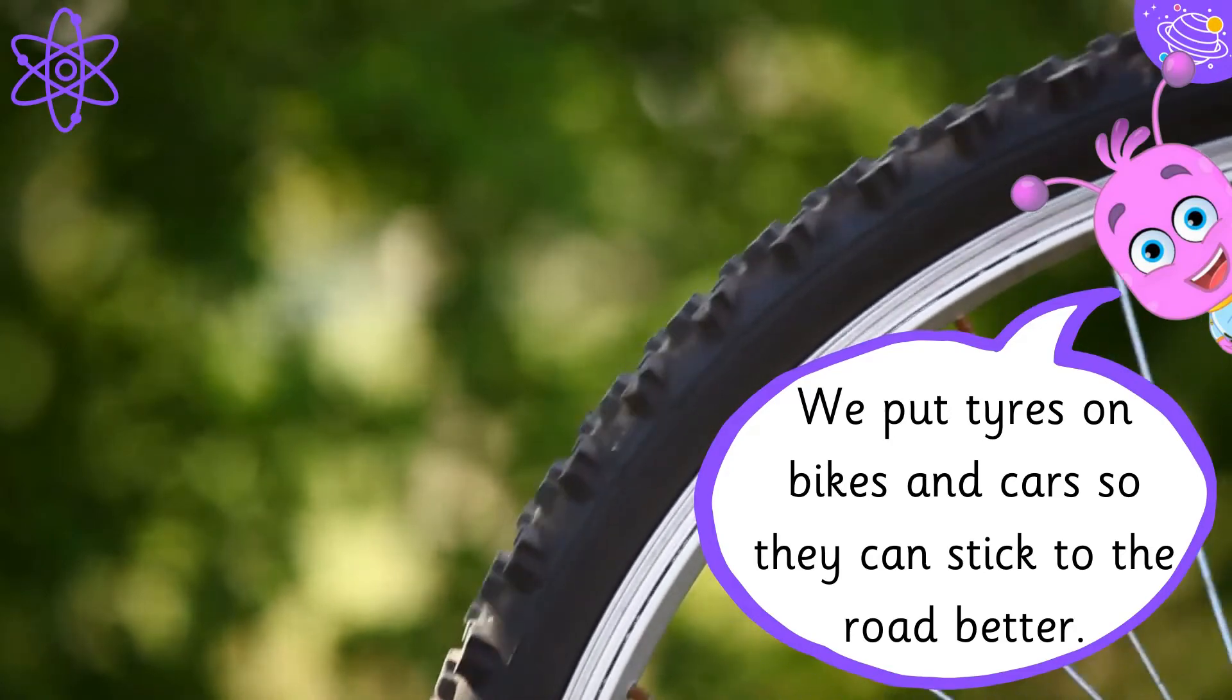We put tires on bikes and cars so they can stick to the road better. Trains have metal wheels on metal tracks. We have metal skates to move on ice. We have rough running tracks and rough soles on shoes for better grip.